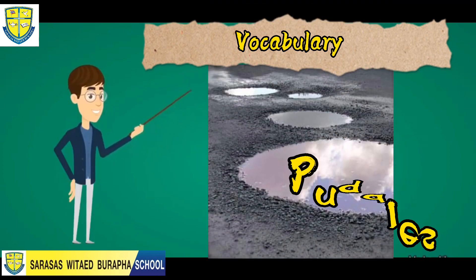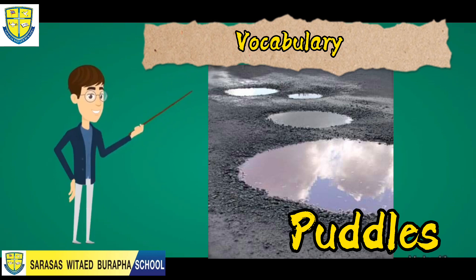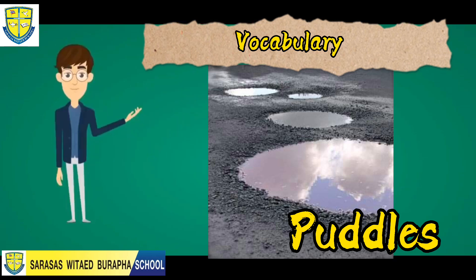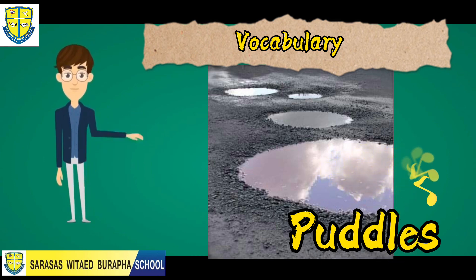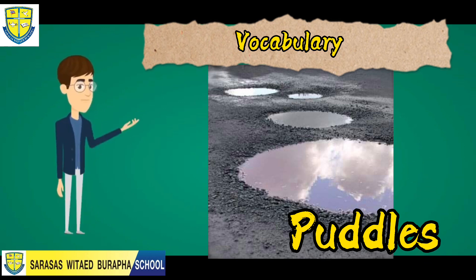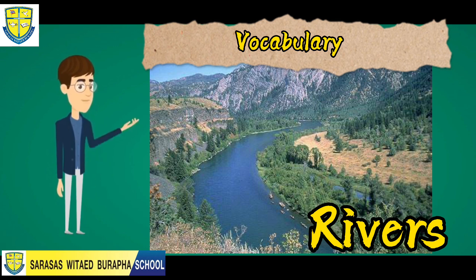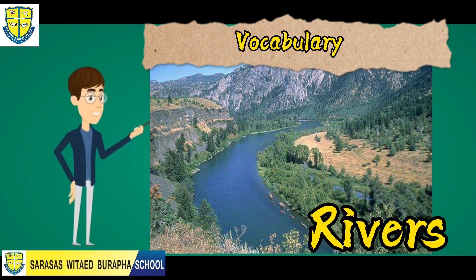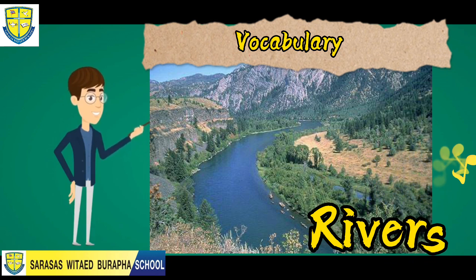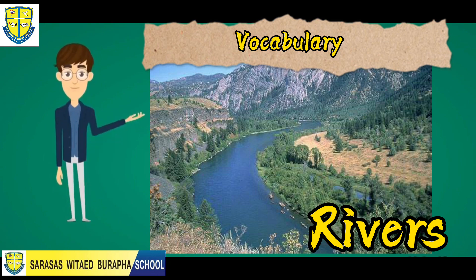Our second vocabulary word is puddles. Now let's spell the word puddles: it's P-U-D-D-L-E-S, puddles. Very good! And our third vocabulary word is rivers. Now let's spell the word rivers: it's R-I-V-E-R-S, rivers. Very good!